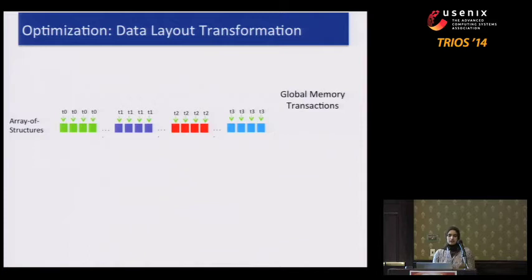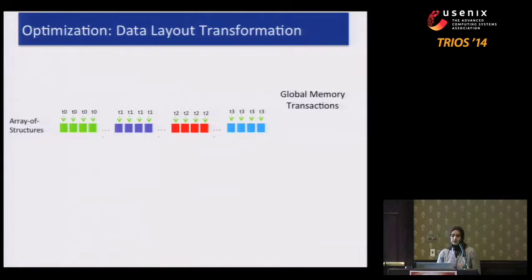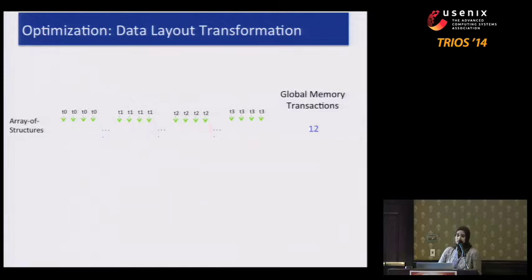The way it would be laid out in memory using a direct mapping, the members of a structure will be contiguously laid out. When different threads work on different members, their accesses would not be sequential — they would be spread apart. This means that when fetching data from global memory, for four threads accessing four members, you end up with 16 global memory transactions.